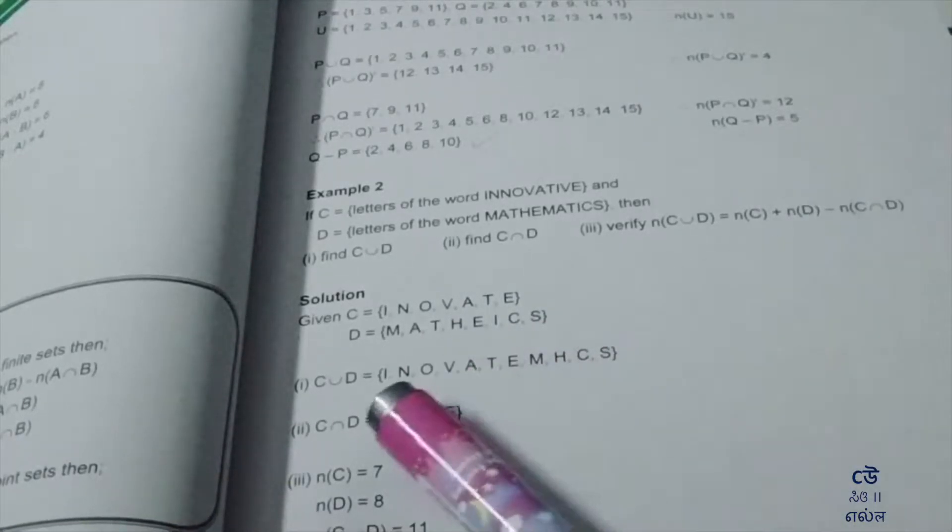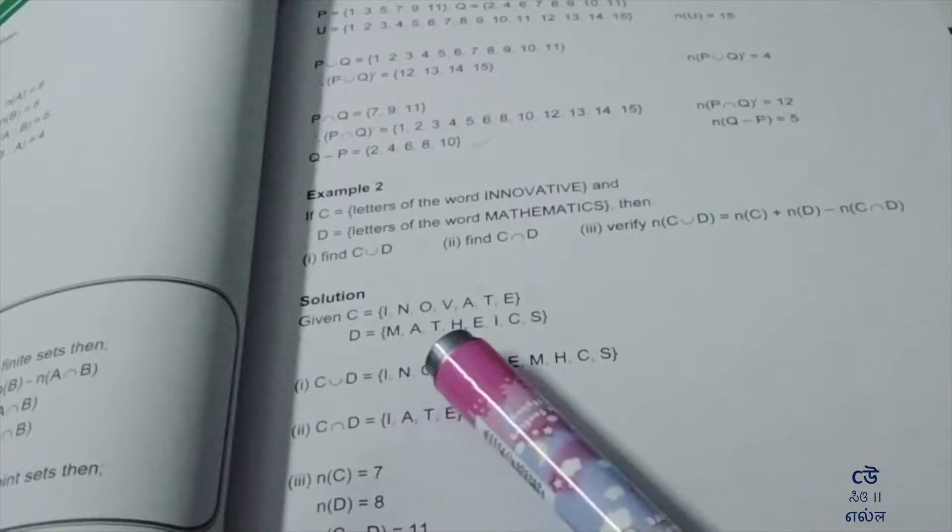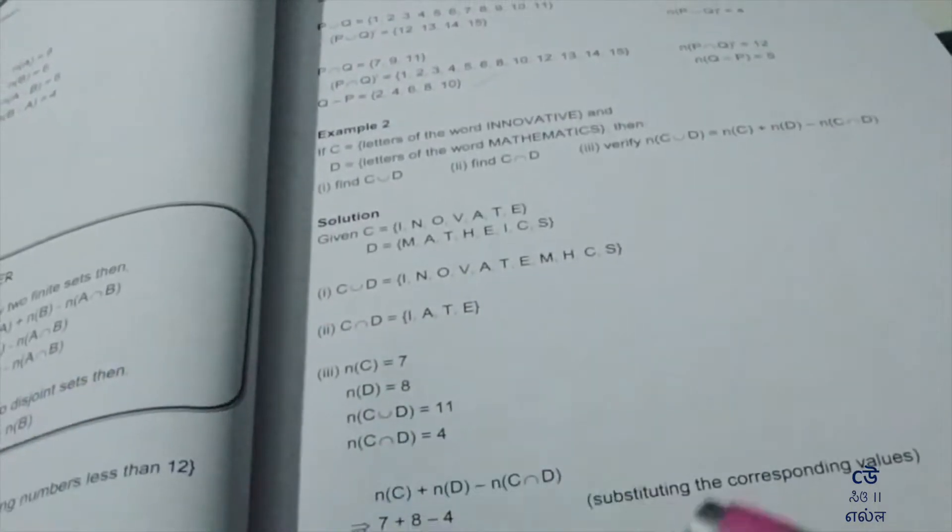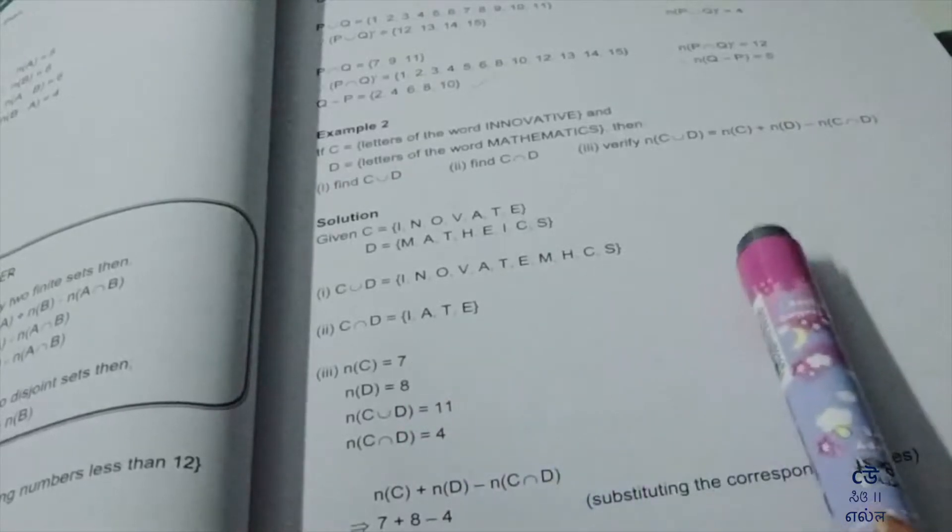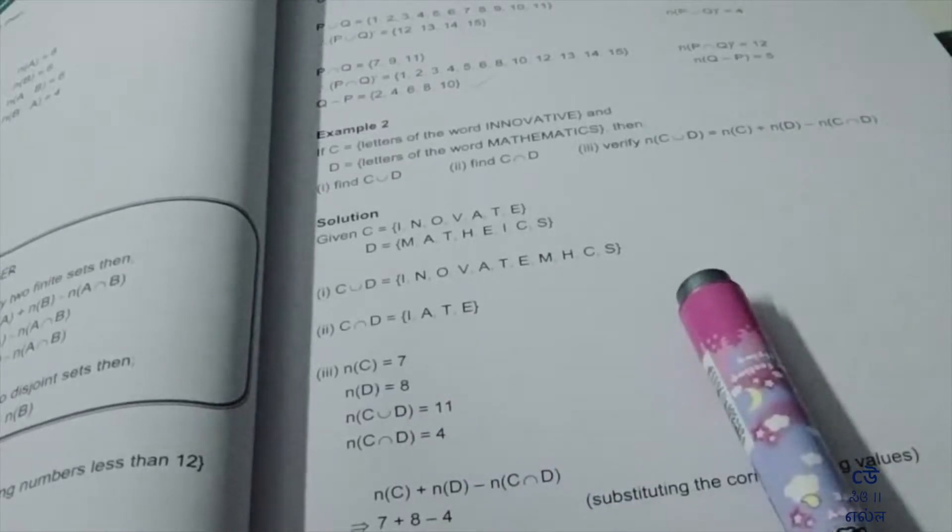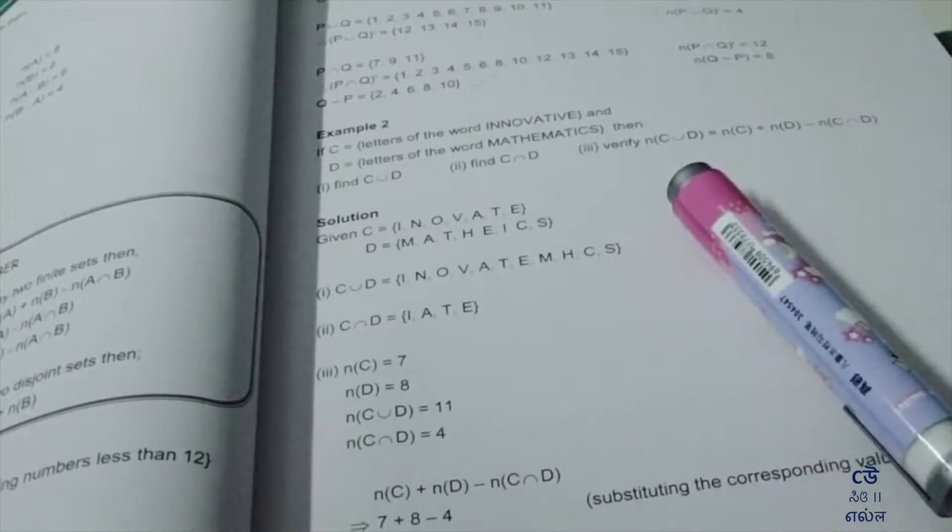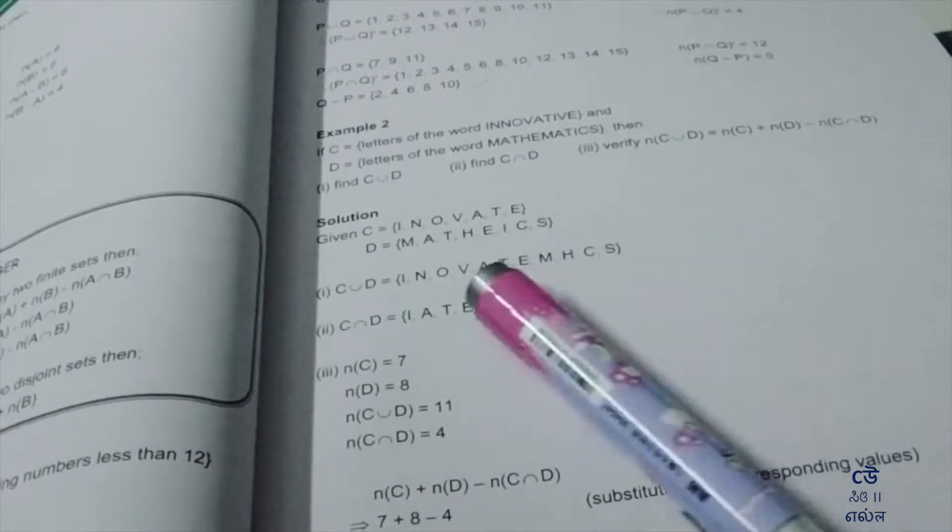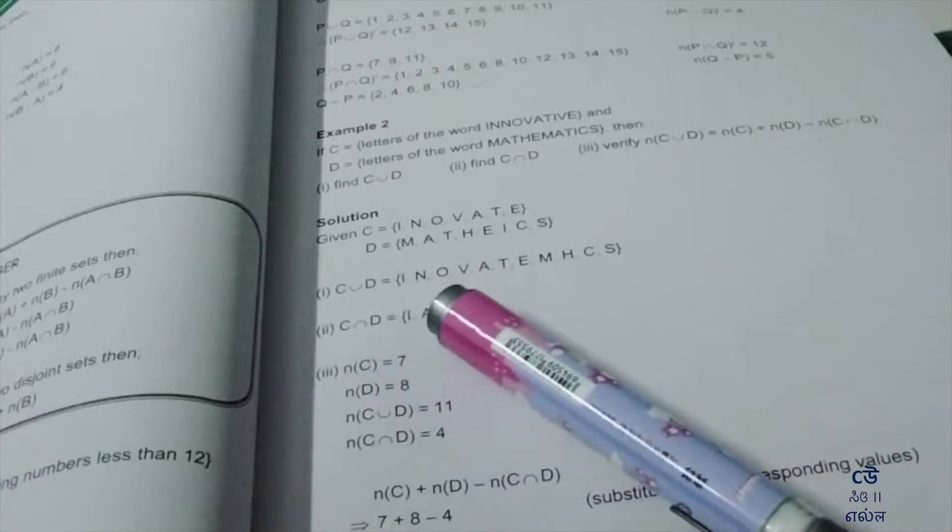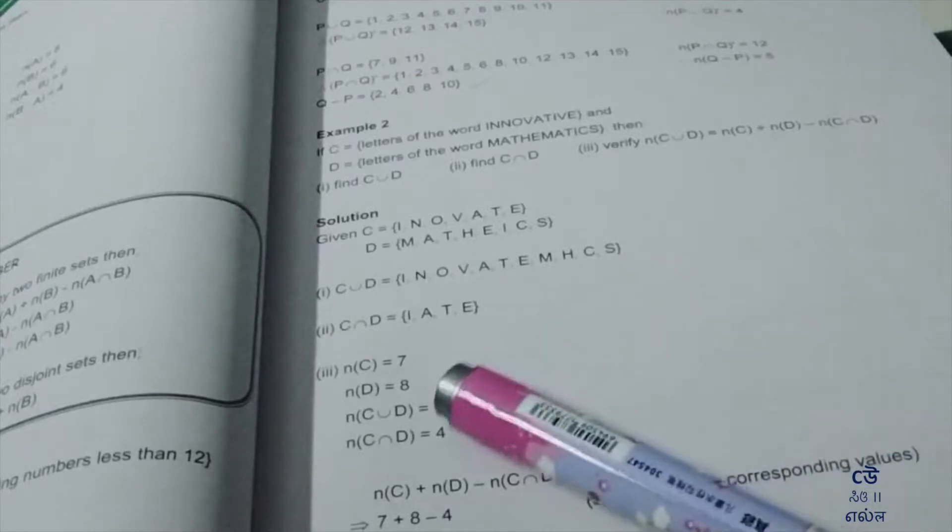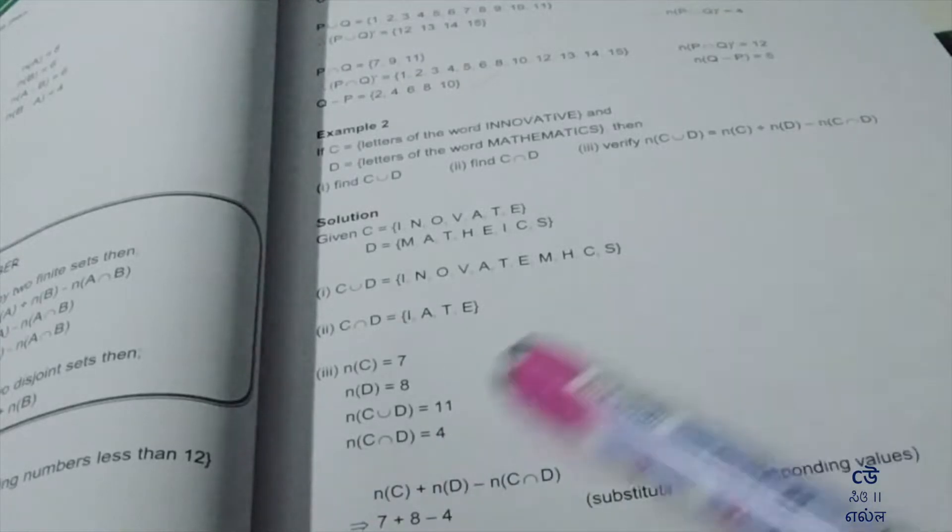Next, n(D): one, two, three, four, five, six, seven, eight. n(D) = 8. Next, n(C∪D): one, two, three, four, five, six, seven, eight, nine, ten, eleven. So n(C∪D) = 11.